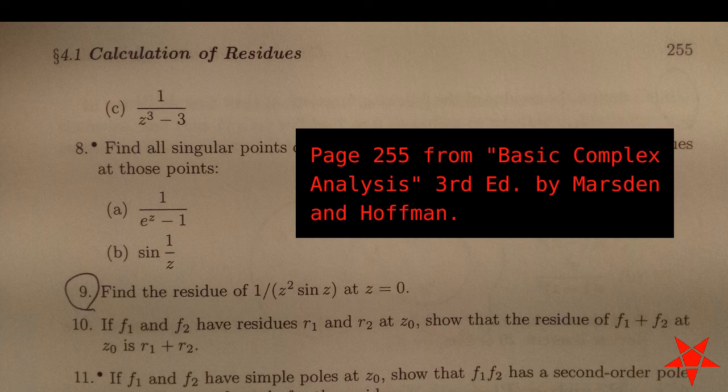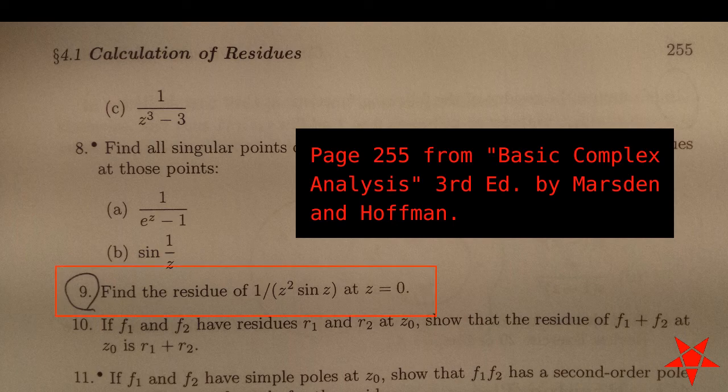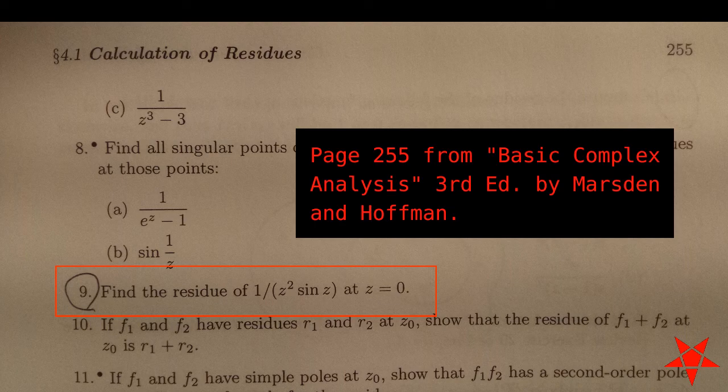Welcome back to Pentagram Prime everyone. Picking up roughly where we left off on page 255 of Marsden and Hoffman, we are now tasked with exercise number 9 that asks us for the residue of 1 over z squared sine z at z equals 0.